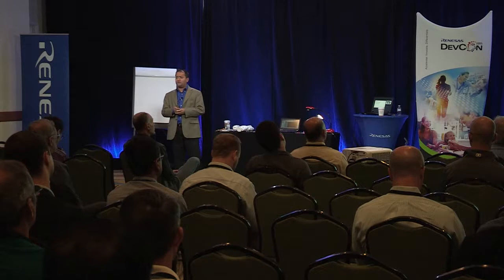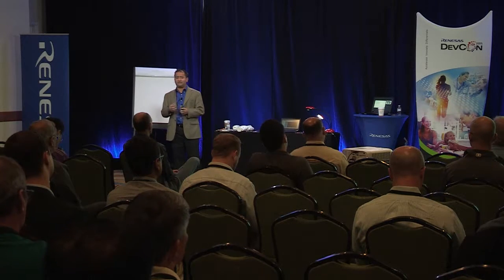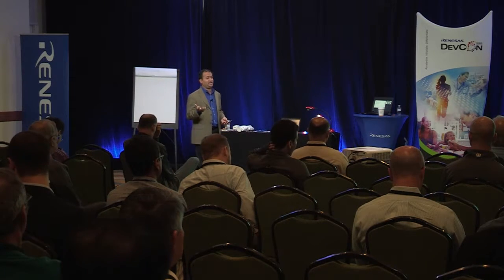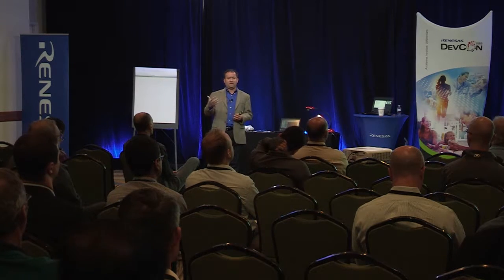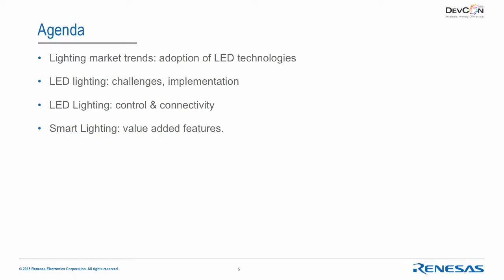In terms of agenda, we'll start by looking at the state of the lighting market today and discuss some market trends, specifically LED lighting and why it's becoming so popular. Then we'll look one to two years into the future and discuss control and connectivity for lighting. We'll look three to five years out to discuss smart lighting — its features and value — and we'll end possibly with a demo.